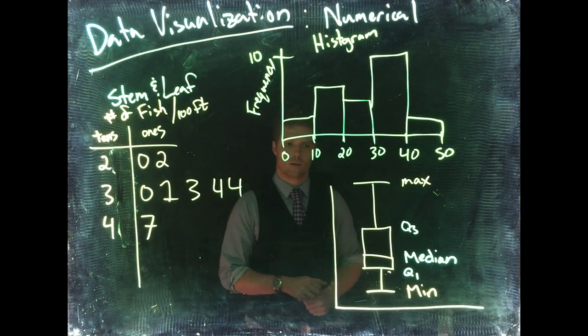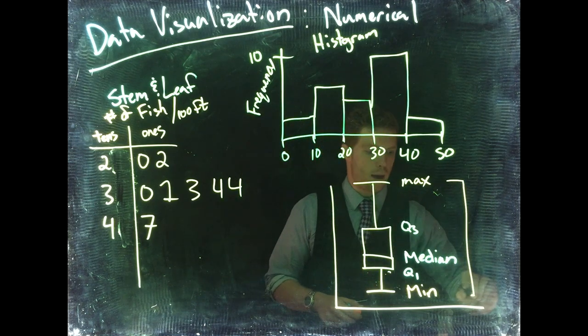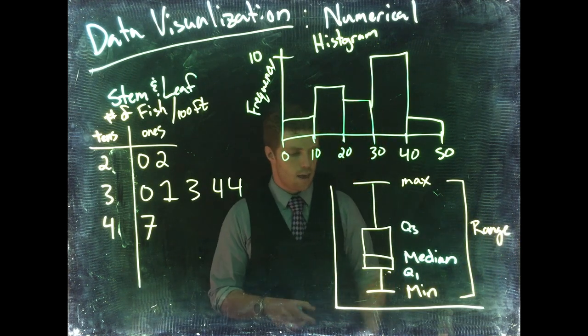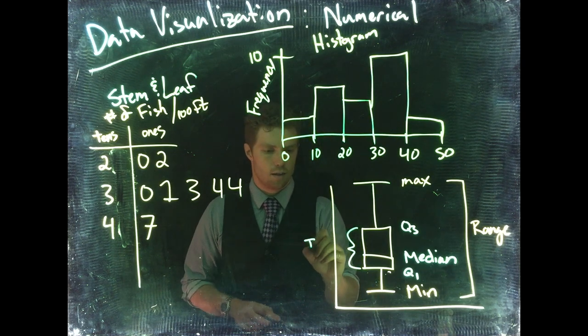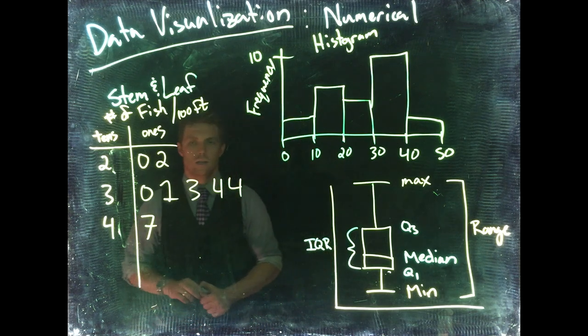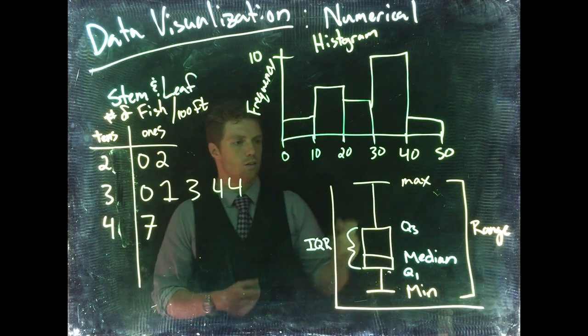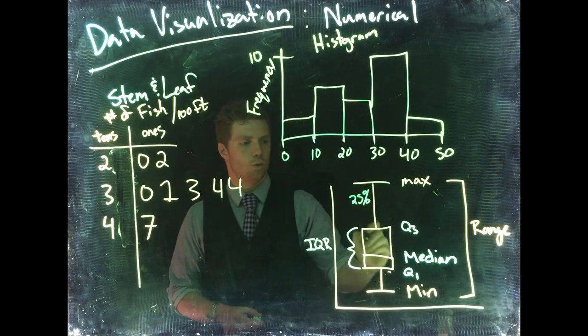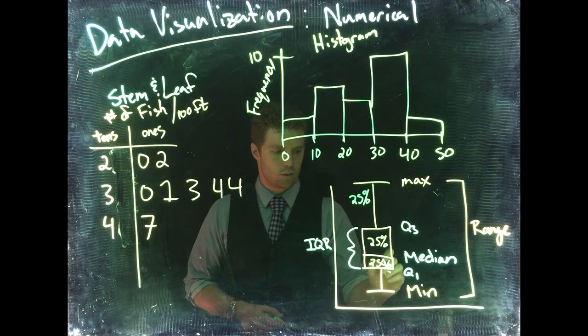We can also talk about our range, so max minus min—that is the range. And then we can talk about another piece of info, this is called the IQR or interquartile range. What's interesting about each of these chunks is each of those chunks represents 25 percent of the data. So that chunk is 25 percent, this one is 25 percent, this is 25 percent, and this last one is also 25 percent.